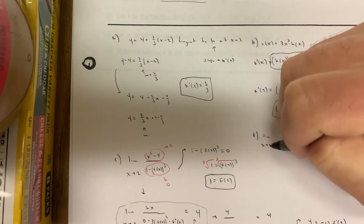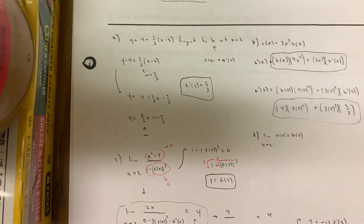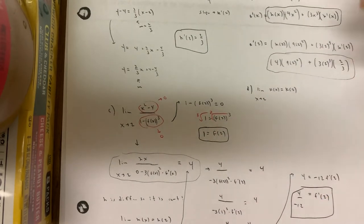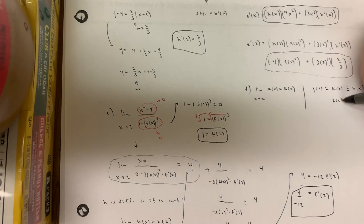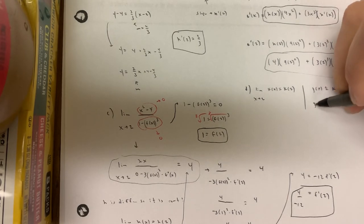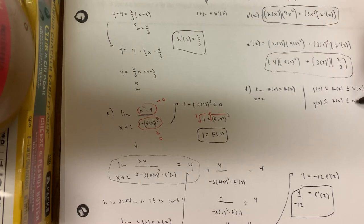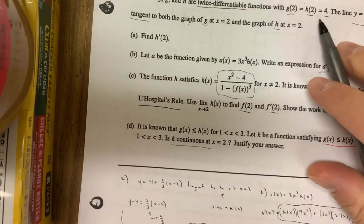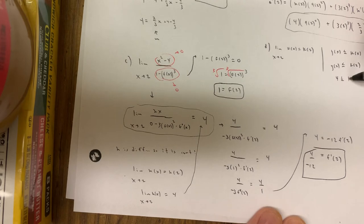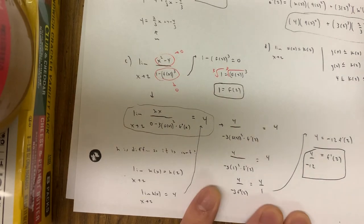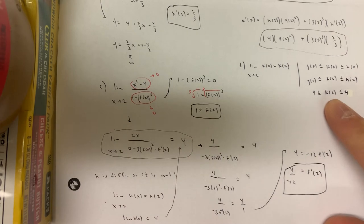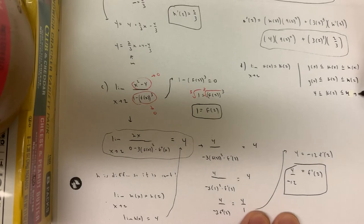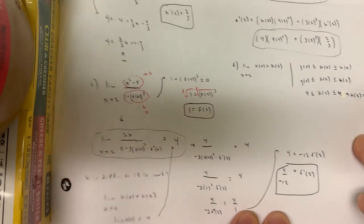For k to be continuous at x = 2, we need the limit as x → 2 of k(x) to equal k(2). Since g(x) ≤ k(x) ≤ h(x), plugging in x = 2: g(2) ≤ k(2) ≤ h(2), which means 4 ≤ k(2) ≤ 4. This implies k(2) = 4.